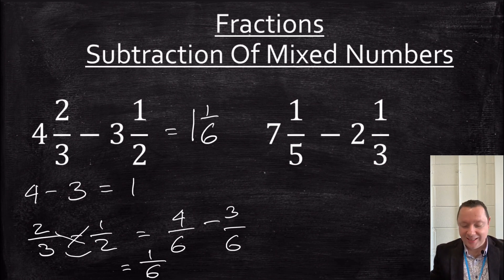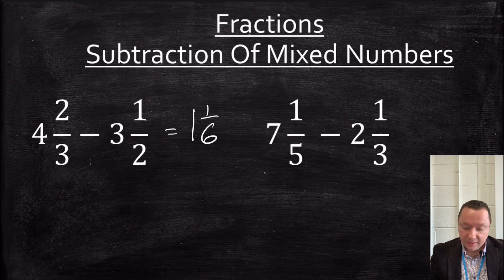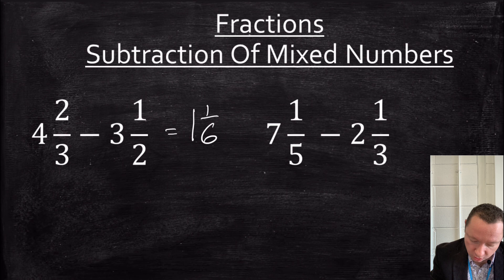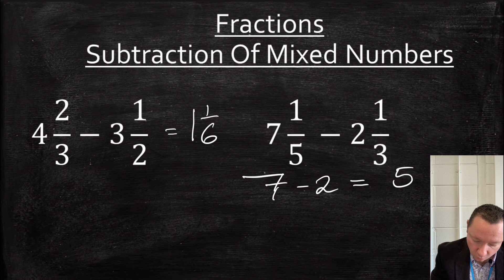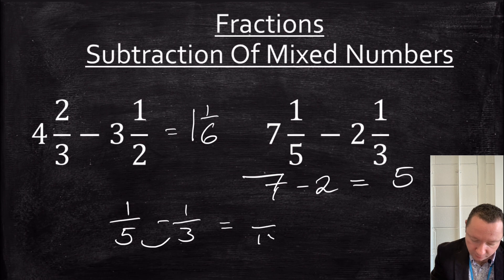Let's look at the second example. So the second example says 7 and 1 fifth minus 2 and a third. So I can do 7 minus 2 and get 5. And I've still got 1 fifth minus a third. So common denominator, 5 times 3 equals 15. So I get 2 fractions with 15, minus in between.